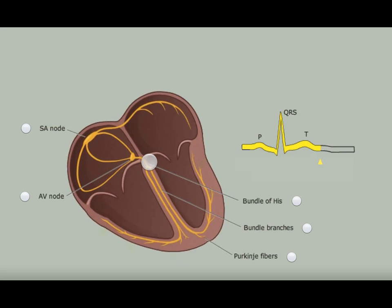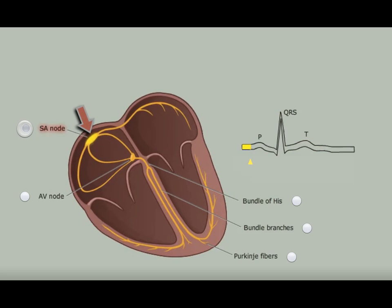The sinoatrial node, called the SA node, normally initiates depolarization. The SA node is high in the right atrium, or RA for short, at the junction of the superior vena cava and the RA. Therefore, the right atrium starts to depolarize first and overlaps in time with the depolarization of the left atrium.